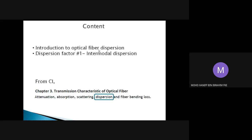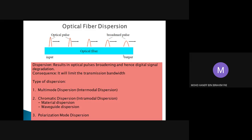After the introduction we're going to look at dispersion factor number one, which is intermodal dispersion. This diagram is sketched to show the effect of dispersion. The blue line is the optical fiber - this is the input point and this is the output. If we pump in pulses produced by the laser or light source, as the signal propagates along the fiber it is noticed that the width of the pulse will be broadened.